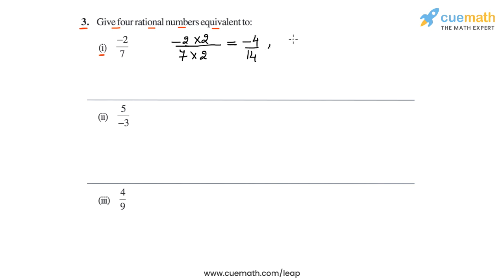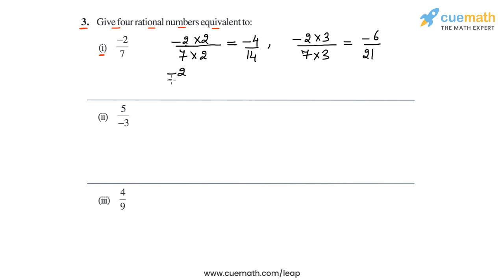Then if we multiply both numerator and denominator of minus two by seven with three, this will give us minus six by 21. So this is another equivalent rational number. Then we multiply both numerator and denominator of minus two by seven with four, the next integer multiplier. So this will be minus eight by 28.